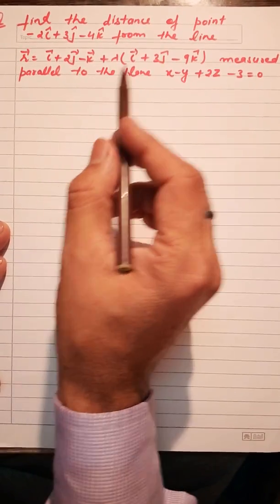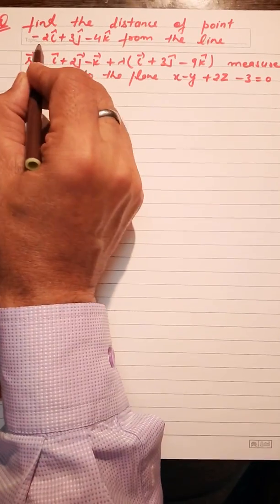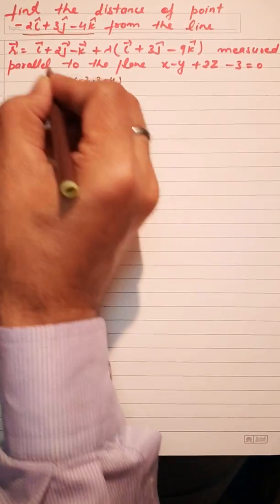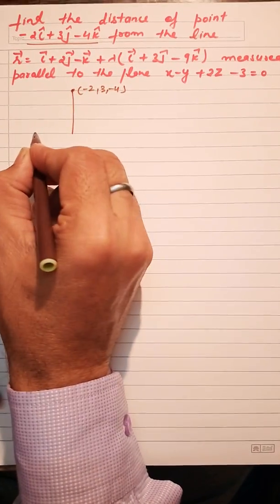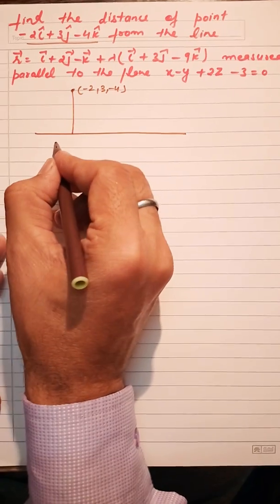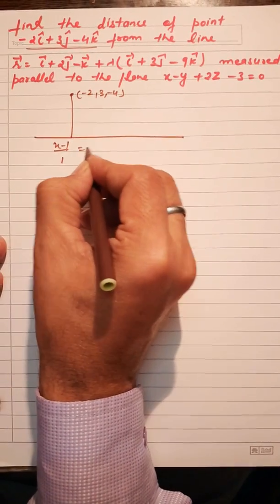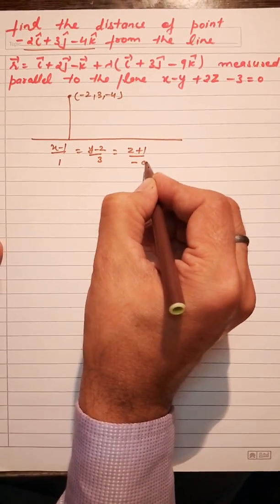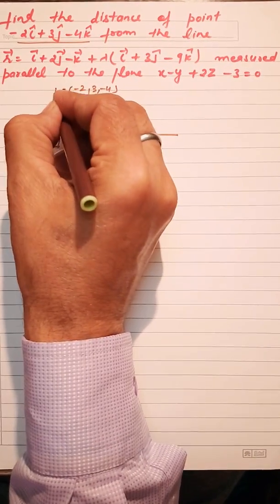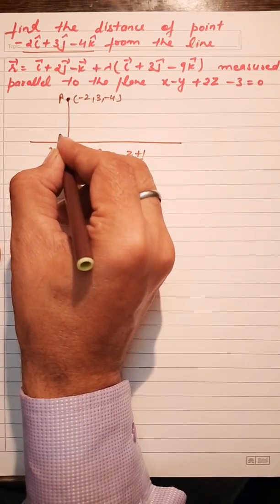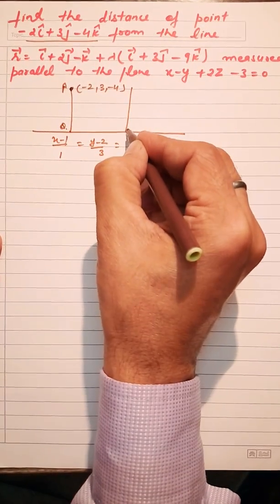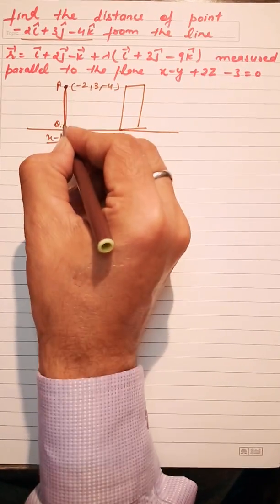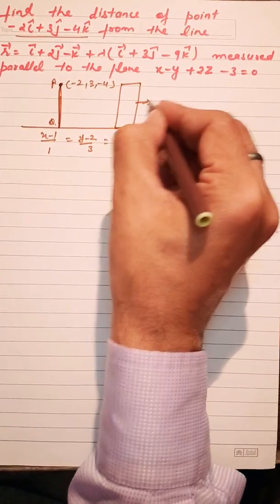Let us discuss the problem of finding the distance of the point (-2, 3, -4) from the line x-1/1 = y-2/3 = z+1/-9. We have to find the distance of this point P from the line, where the distance is measured parallel to a given plane. The line and this plane are parallel to each other.